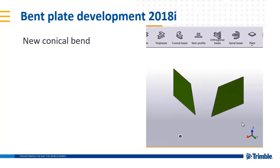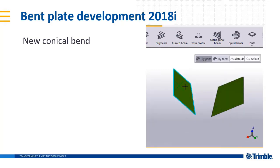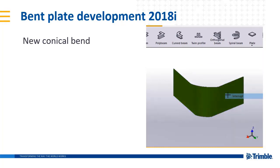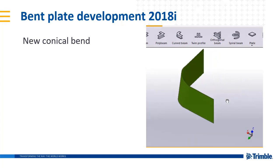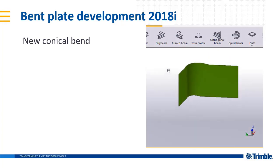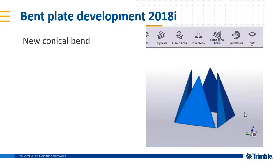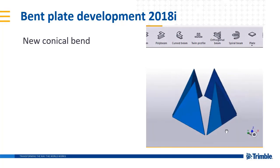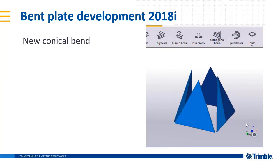You can now model both radial and conical bends and unfold these plates in drawings and CNC. As you can see here, it's a very simple command to use, and where appropriate, a conical bend can be fit between two parts. This enables the modeling of even more plate work structures and parts, including transitional sections and cones.